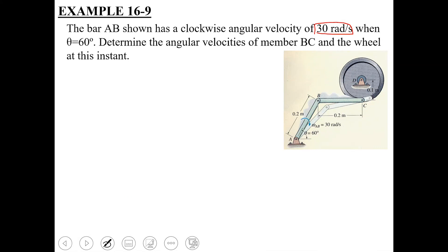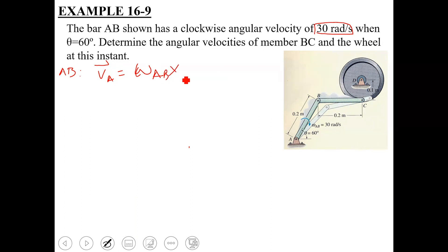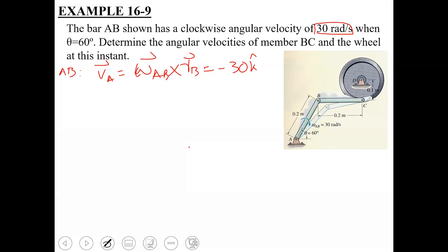For link AB, which is in pure rotation with respect to point A, the velocity of B is omega cross R, where omega is omega_AB. Since it is given as clockwise at 30 radians per second, we write omega_AB as minus 30k. You will not assume the direction here because a value is already given; use it in its correct sense. So omega_AB equals minus 30k radians per second.